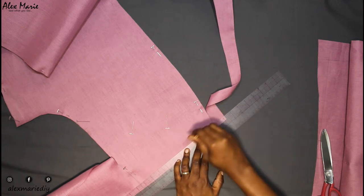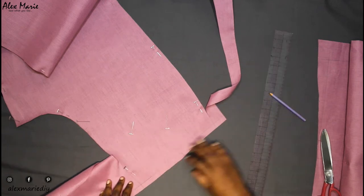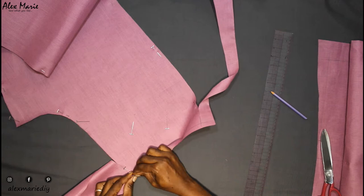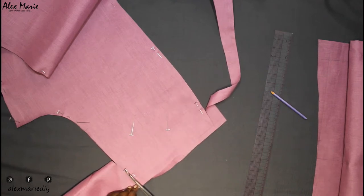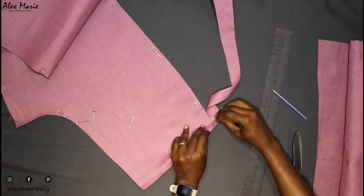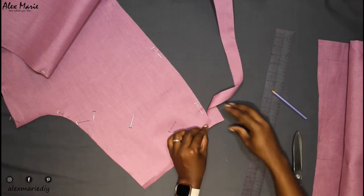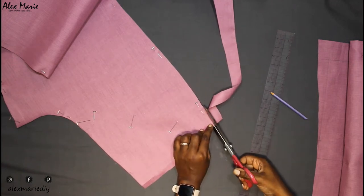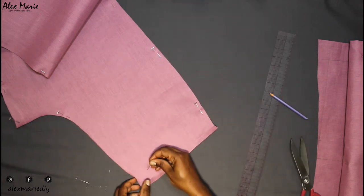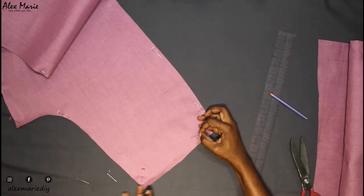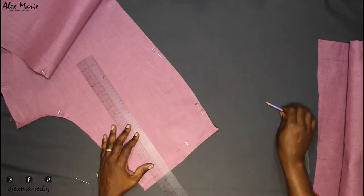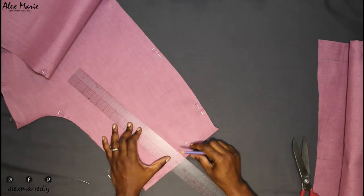I'm doing a similar thing at the waistline. You draw in your seam allowance, fold it under and cut. Remember to clip your notches and draw in your darts.